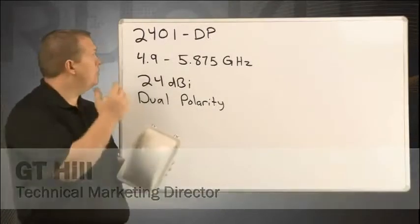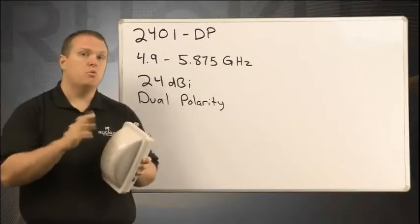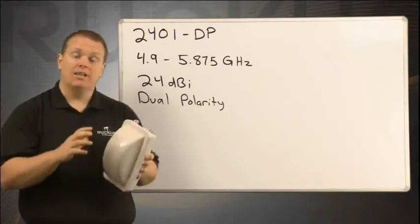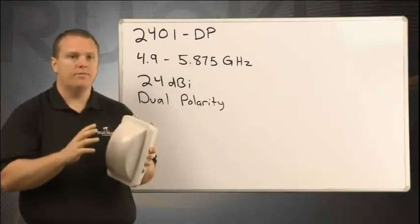An example of that would be the 2401 dual polarized antenna. Now it gives you 24 dBi of gain, that's a lot. It gives you about a seven degree beam width which is very nice and tight. Now this is a panel antenna.